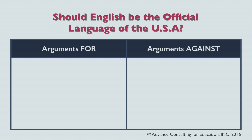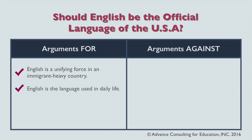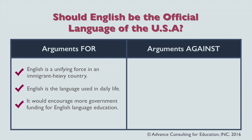Arguments for English as an official language in the United States include: English serves as a unifying force in a country of many immigrants; it is already the de facto official language used in daily life; and making it official would allow the government to allocate more funding to support English language education at all levels, from kindergarten through adult education.